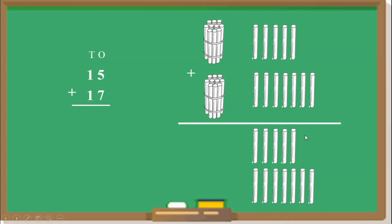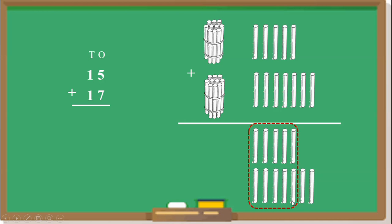Now, children, can we write 12 here? No, because this is the 1's place. From these 12 loose sticks, we can make 1 bundle of 10 sticks. We count out 10 sticks and bundle them. This dotted line shows 1 bundle of 10 sticks, made from the combined 12 sticks. Ten loose sticks equals 1 bundle.